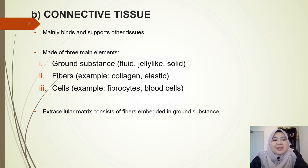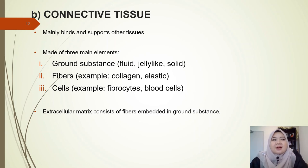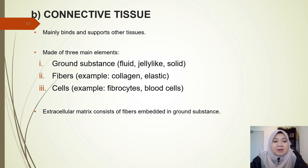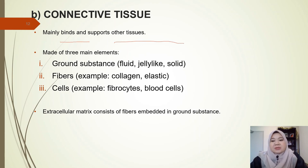The next category of animal tissue is connective tissue. Connective tissue is a sparse population of cells scattered through an extracellular matrix (ECM) that holds tissues and organs in place. Connective tissue mainly binds and supports other tissues.